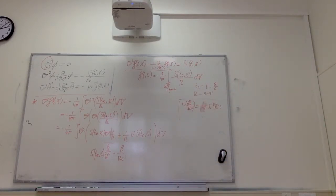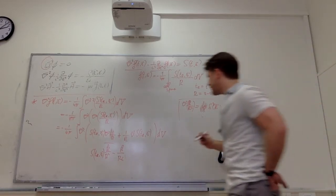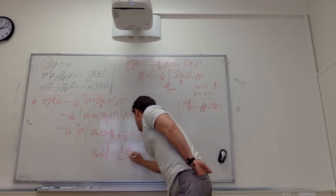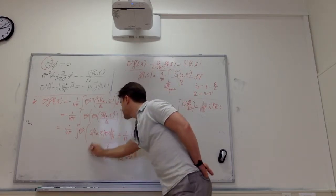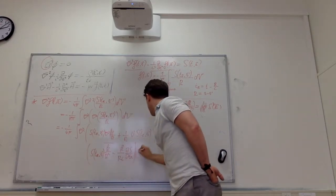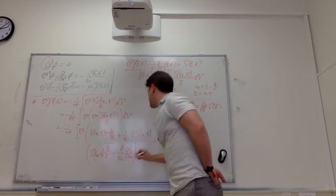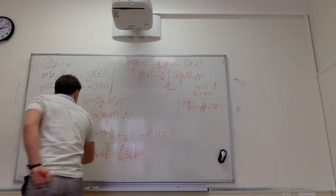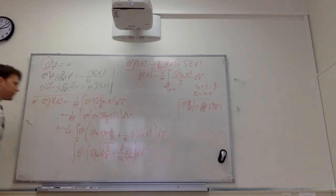We are missing ds over dt_r — adding that in, we now have our full expression for the gradient and are ready to take the divergence.